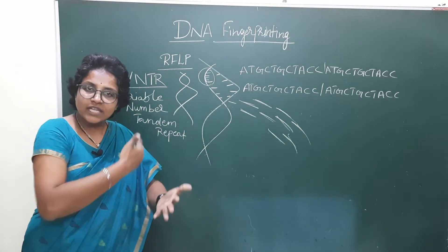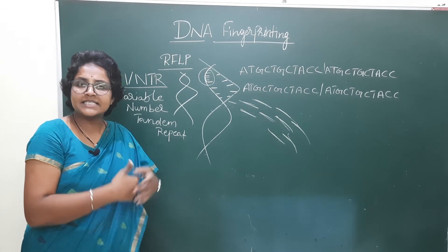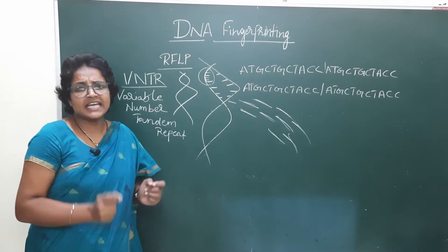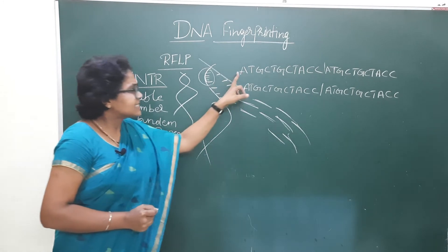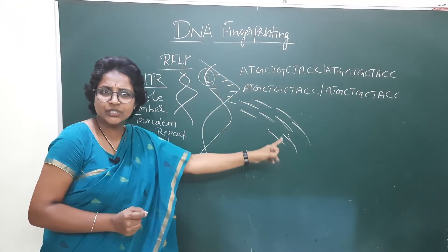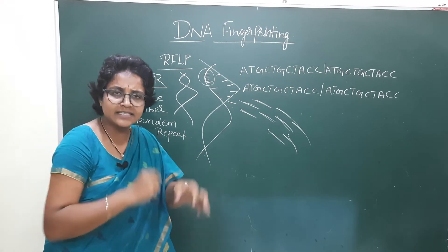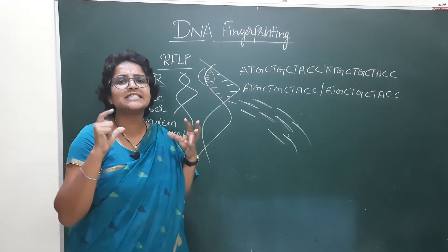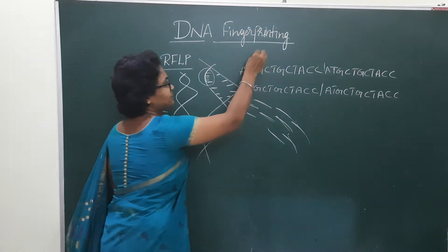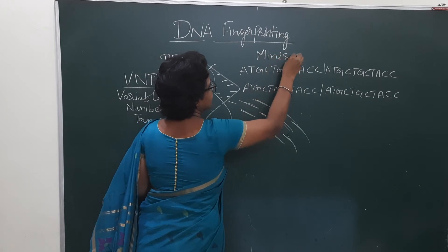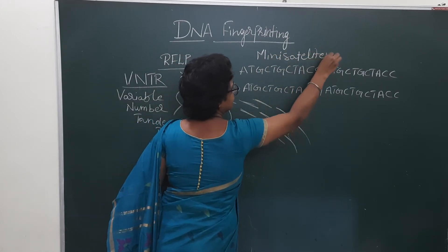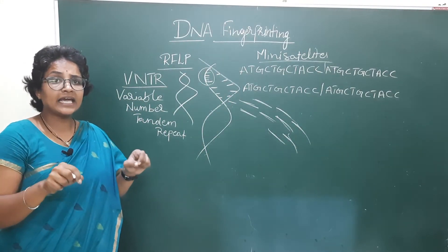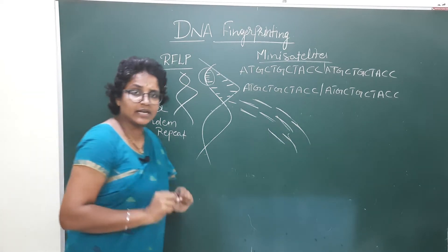VNTRs act as a genetic marker and are very useful in DNA fingerprinting. This type of nitrogenous base stretch — 10 to 100 nucleotide base sequences — which repeat many times are hence called mini-satellites. Mini-satellites are useful in DNA fingerprinting.